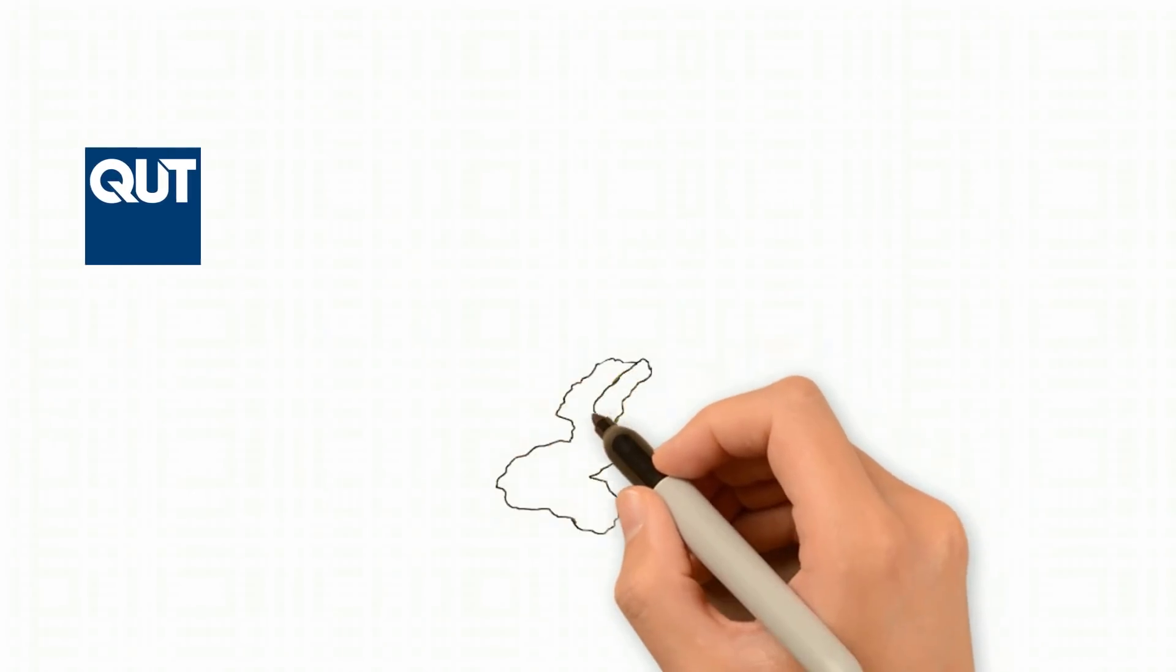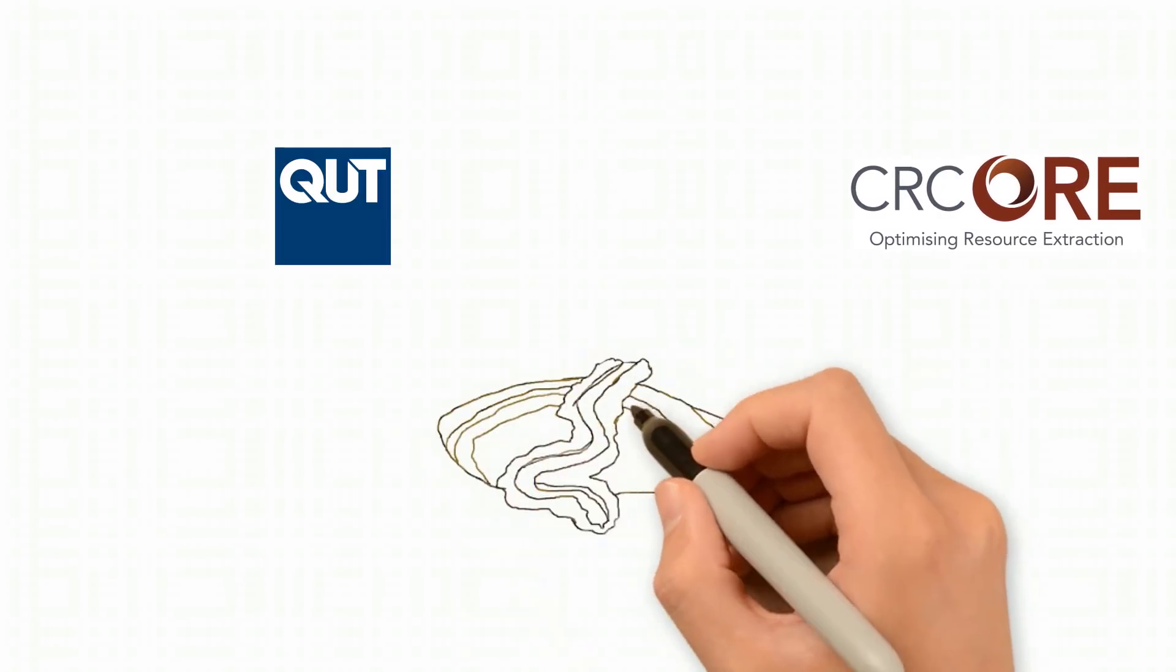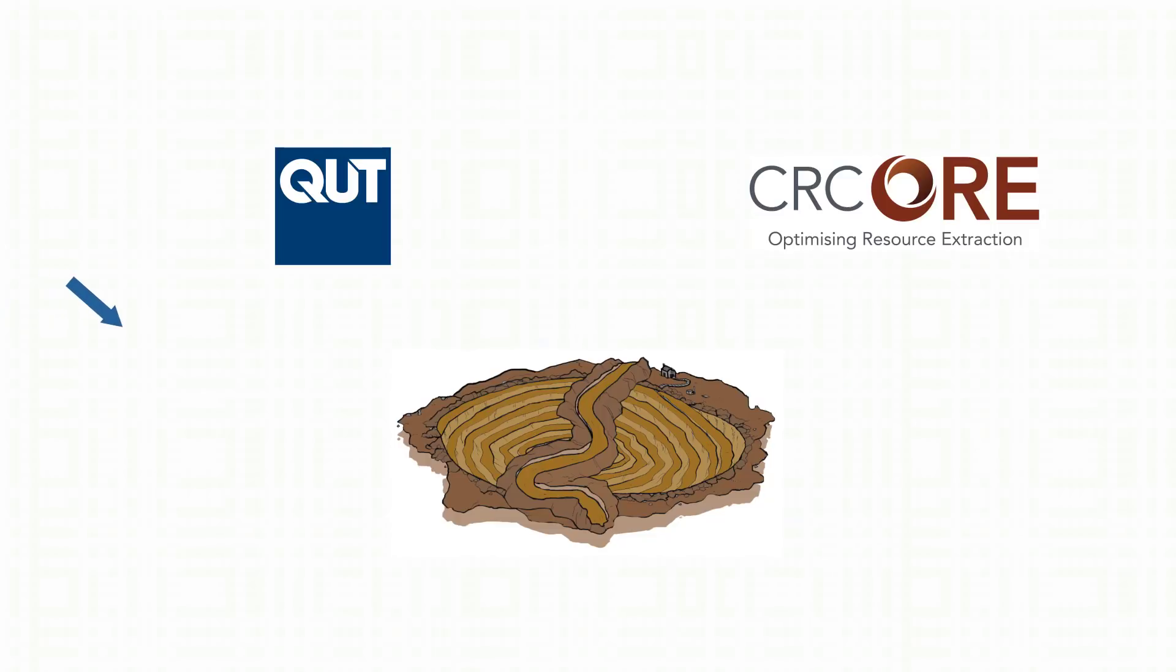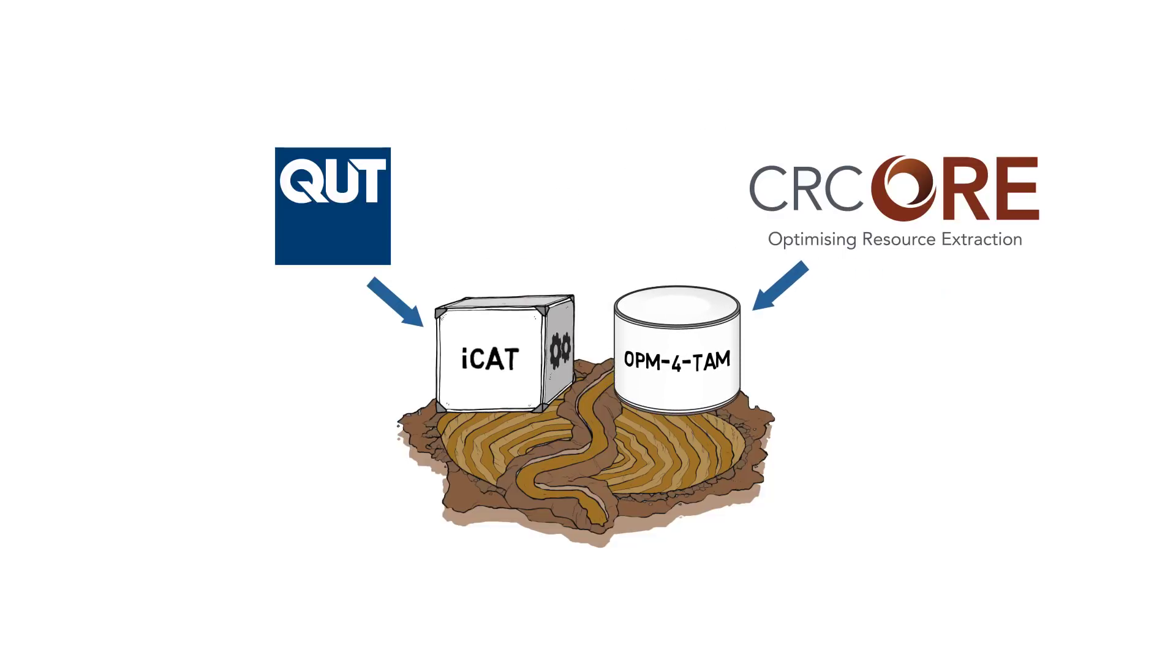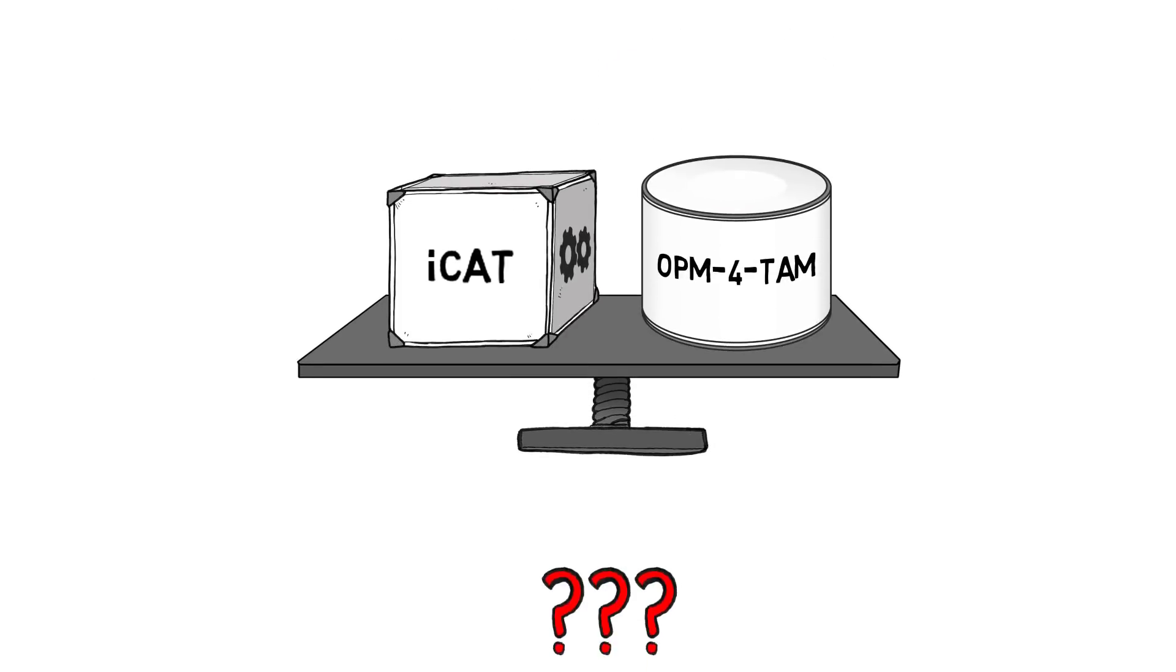Our team at the Queensland University of Technology, in collaboration with the Cooperative Research Centre for Optimising Resource Extraction, has developed two tools to support innovation in mining: an Innovation Cultural Assessment Tool (ICAT) and an Organisation Process Model for Technology Adoption in Mining (OPM for TAM), that integrate latest research with mining practice. These tools were designed to assist senior leaders and relevant decision makers engaged in disruptive innovation.